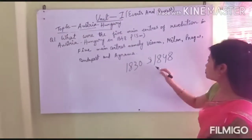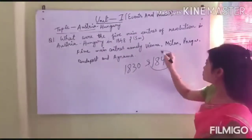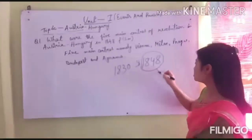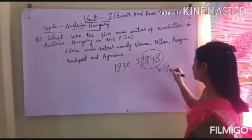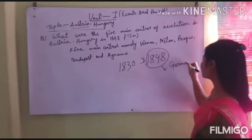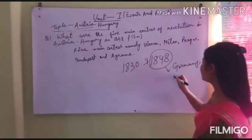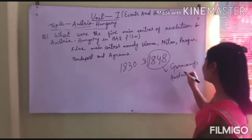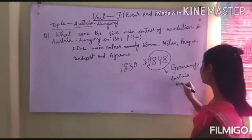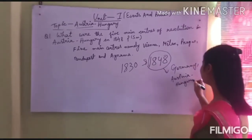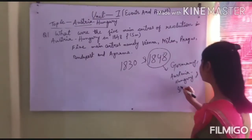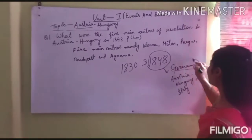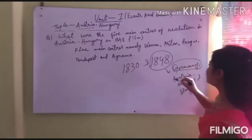In the 1840s and the February Revolution of 1848, the European countries were mainly spread in Germany. Austria-Hungary spread into Turkey, and Italy also spread into Turkey. Then in Germany, this revolution failed.